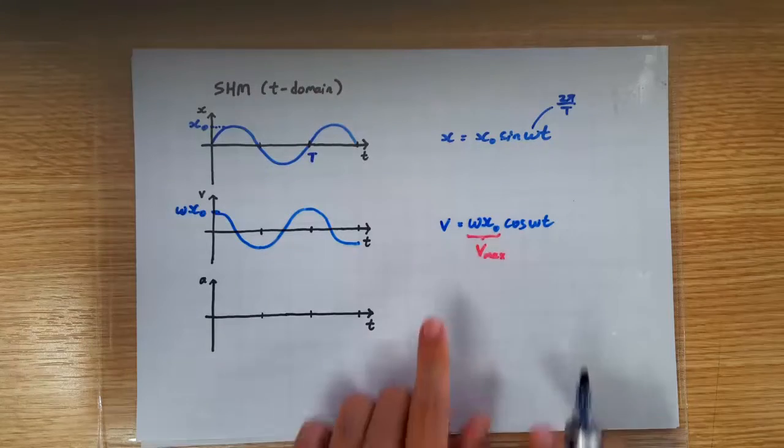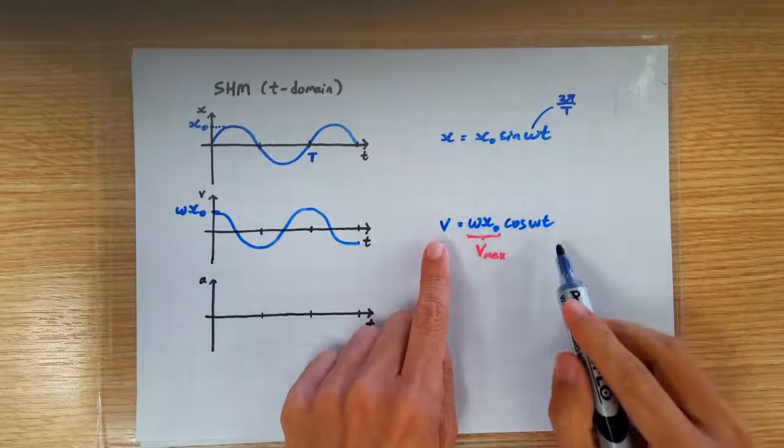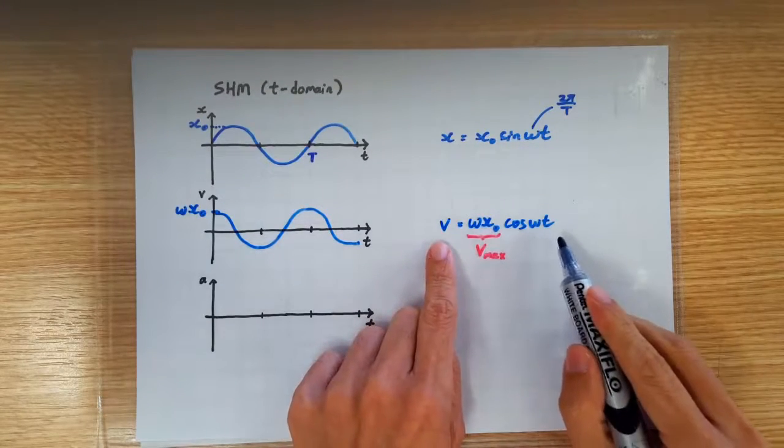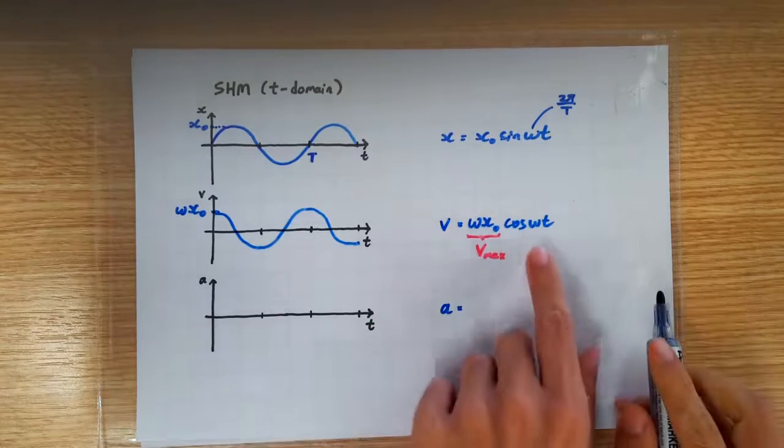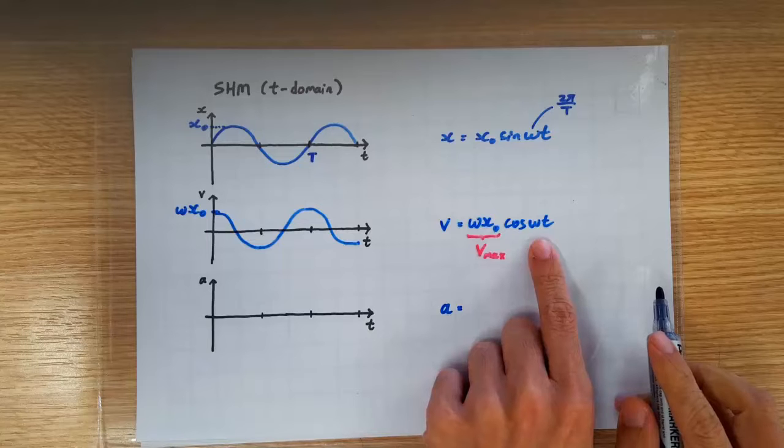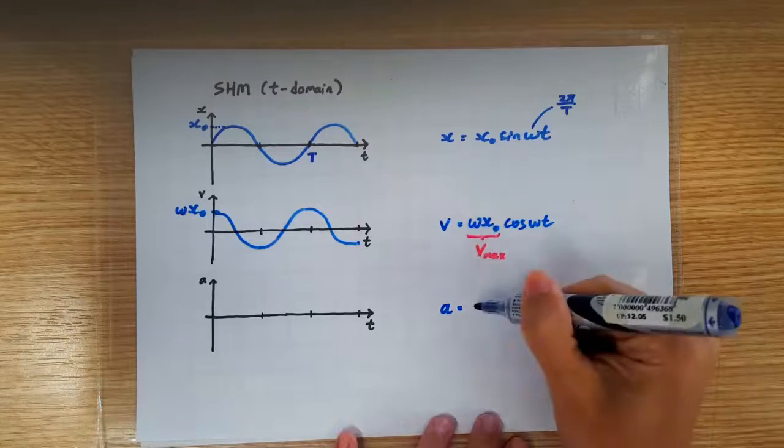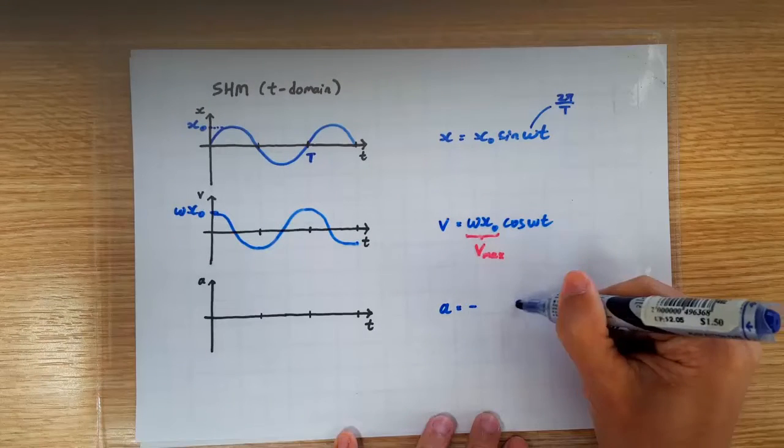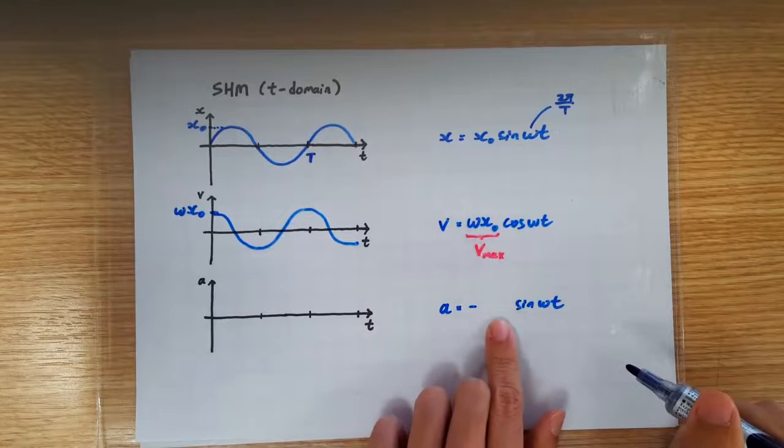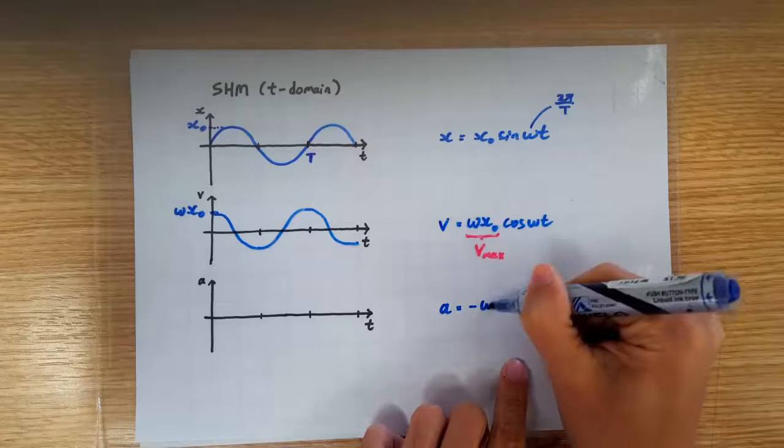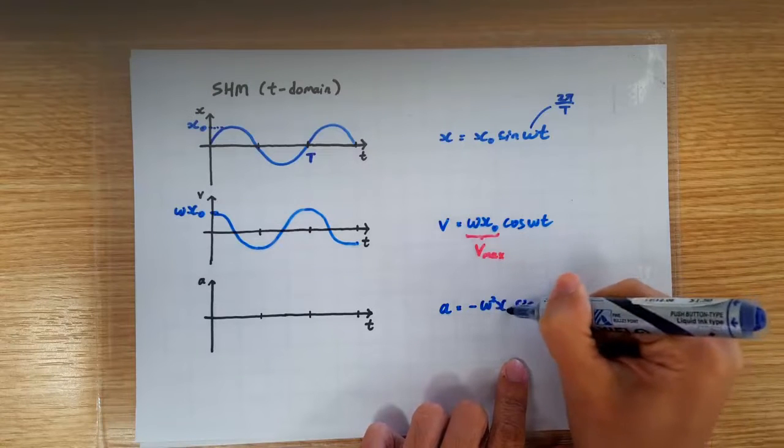So, we're going to do the trick one more time. We're going to differentiate with respect to time this equation here. So, dv/dt is acceleration. When we differentiate cos, we get negative sin, and the omega is going to pop out once again, giving us ω²x0.